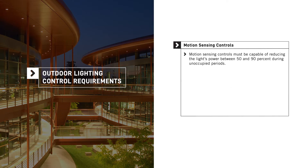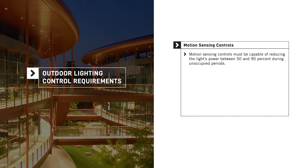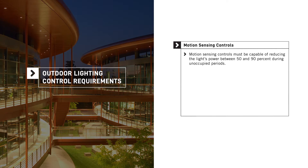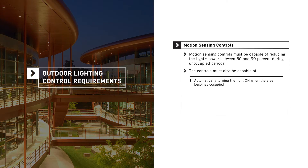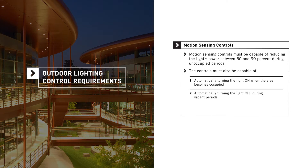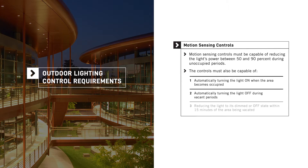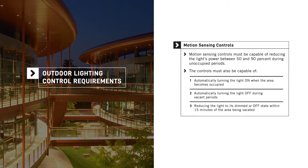Motion sensing controls must be capable of reducing the light's power between 50 and 90 percent during unoccupied periods, including those that occur during business hours. The motion sensing controls must also be capable of automatically turning the light on when the area becomes occupied, automatically turning the light off during vacant periods, and reducing the light to its dimmed or off state within 15 minutes of the area being vacated.